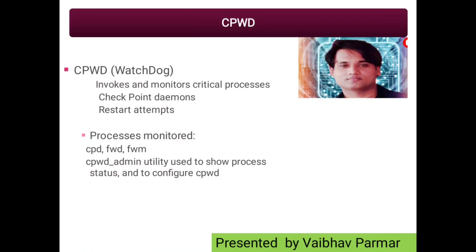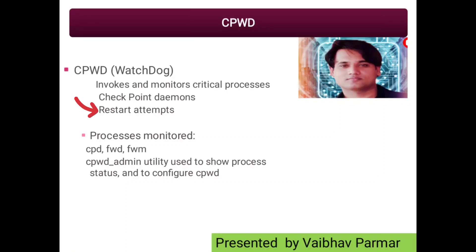The last process I would like to mention here is CPWD, which we also call the watchdog. CPWD or watchdog is a process that invokes and monitors critical processes such as CheckPoint Daemon (CPD), FWD, and FWM on the local machine. It has the functionality to attempt to restart these processes when they fail. For example, when you run CP stop and CP start, CPWD watchdog comes into the picture in the background to restart these processes, and it has a built-in feature to attempt restarts if processes go down.